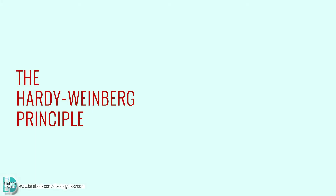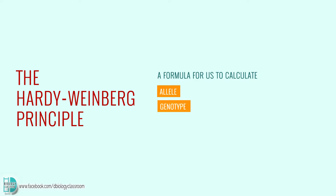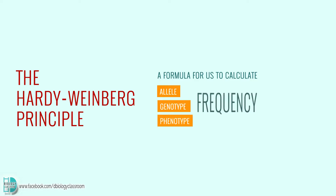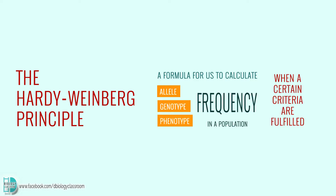The Hardy-Weinberg Principle is a formula for us to calculate the allele, genotype, and phenotype frequencies in a population when certain criteria are fulfilled.